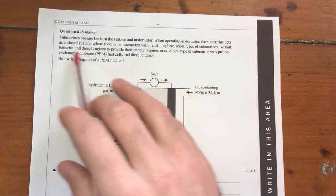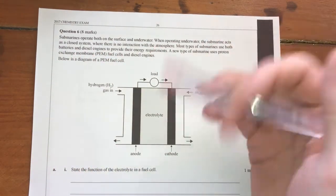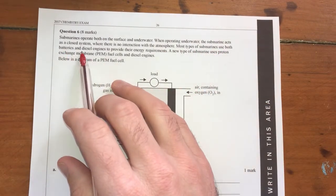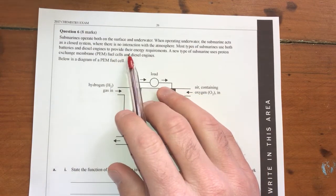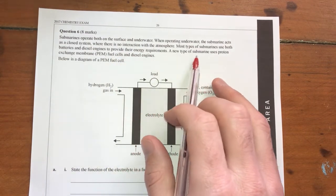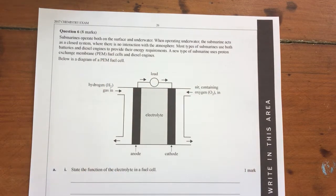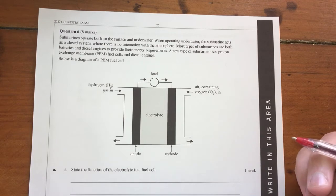When operating underwater, the submarine acts as a closed system where there is no interaction with the atmosphere. So that basically means no oxygen comes in and so on and so forth. Most types of submarines use both batteries and diesel engines to provide their energy requirements. A new type of submarine uses a proton exchange membrane, a PEM fuel cell and a diesel engine.